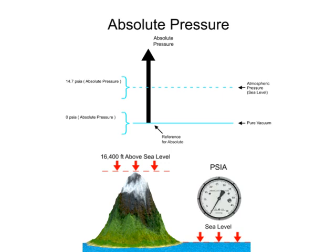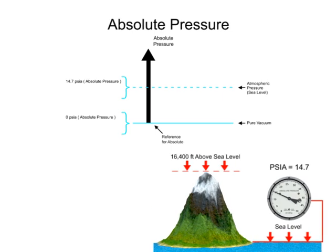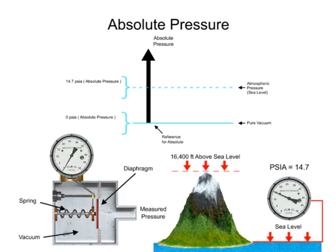When the pressure sensing device is exposed to the atmosphere at sea level, the measurement scale will read 14.7 pounds per square inch. A common method to measure absolute pressure is a mechanical diaphragm gauge. The diaphragm is a flexible membrane that flexes when exposed to pressure. On the opposing side of the diaphragm is the reference pressure, which is vacuum for absolute pressure.